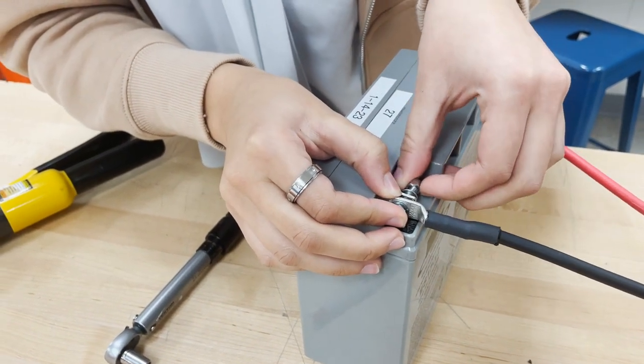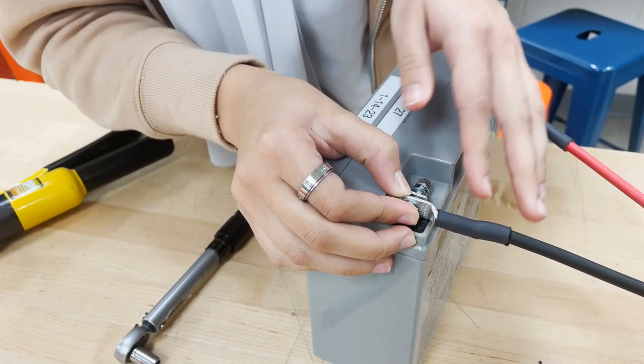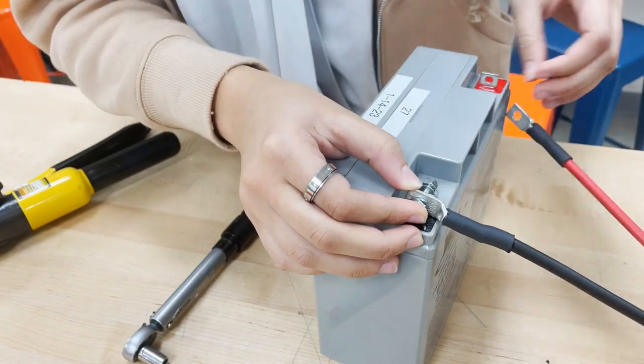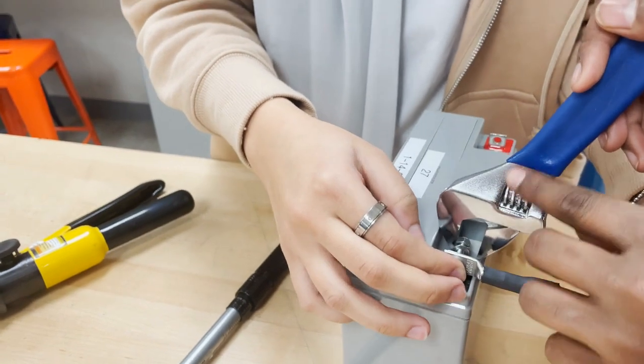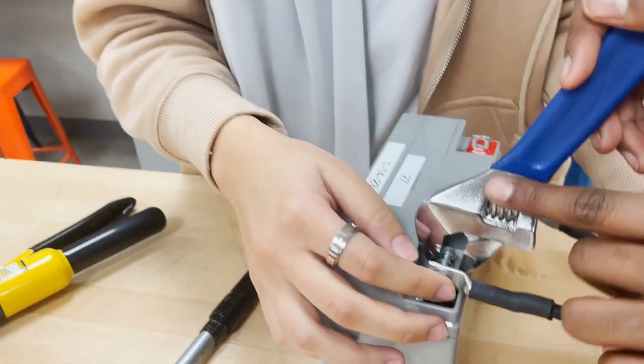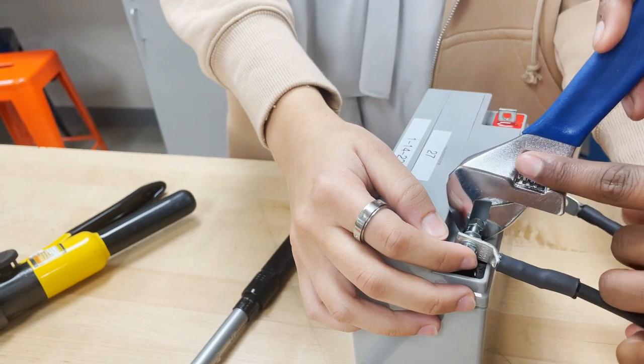So just screw it on lightly. Just like that. And then we need a wrench to hold it. Tighten the monkey wrench.